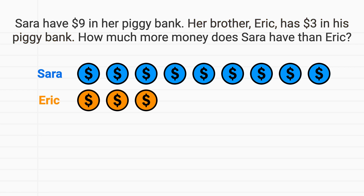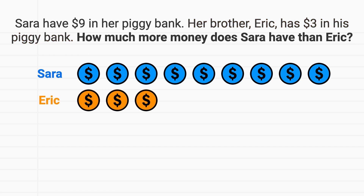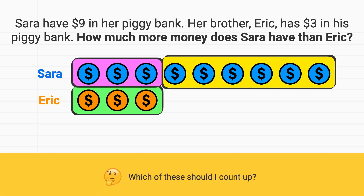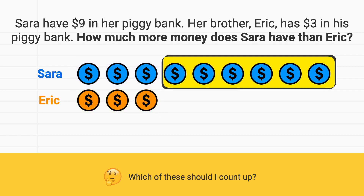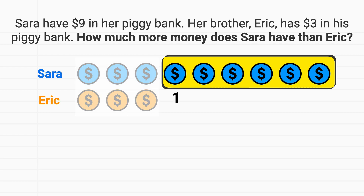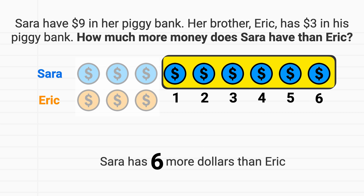Now we need to solve. How much more money does Sarah have than Eric? We will count up this quantity — this is the money that Sarah has but Eric does not. We could count: Sarah has 1 more dollar, 2 more dollars, 3 more dollars, 4 more dollars, 5 more dollars, 6 more dollars. Sarah has 6 more dollars than Eric.